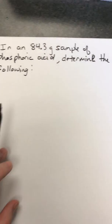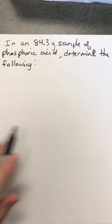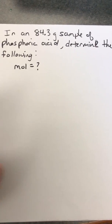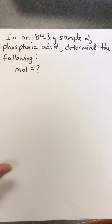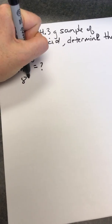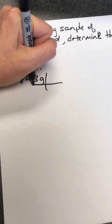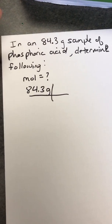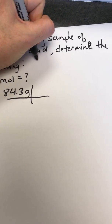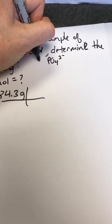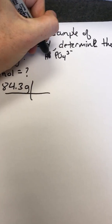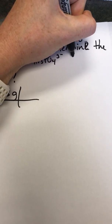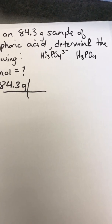Let's start with this question: in an 84.3 gram sample of phosphoric acid, determine the number of moles. Phosphoric acid is an acid made from phosphate — since there's no 'hydro' prefix, it's not binary. Phosphate is PO₄ with a 3-minus charge, so we add three H-plus ions to cancel the charges, making phosphoric acid H₃PO₄.